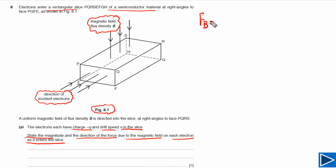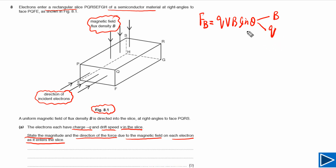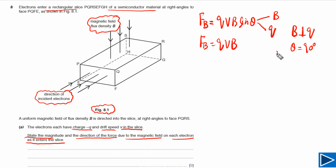First, let's find the magnitude of the magnetic force. Force due to the magnetic field means magnetic force, which is equal to QVB sinθ, where θ is the angle between the direction of the magnetic field and the direction of flow of charge. In this case, B is perpendicular to the direction of flow, so the angle is 90 degrees. Therefore, F_B = QVB, since sin(90°) = 1. So the magnitude of the magnetic force on each electron is simply QVB.